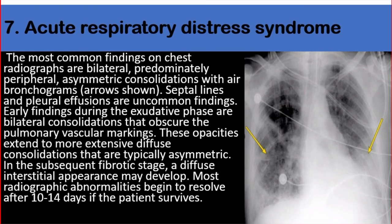Number seven: acute respiratory distress syndrome. The most common findings on chest radiographs are bilateral, predominantly peripheral, asymmetric consolidations with air bronchograms. Septal lines and pleural effusions are uncommon findings. Early findings during the exudative phase are bilateral consolidations that obscure the pulmonary vascular markings. These opacities extend to more extensive diffuse consolidations that are typically asymmetric. In the subsequent fibrotic stage, a diffuse interstitial appearance may develop. Most radiographic abnormalities begin to resolve after 10 to 14 days if the patient survives.